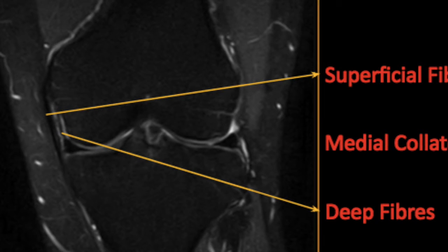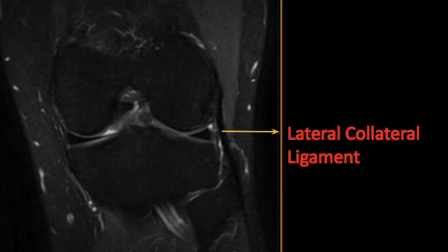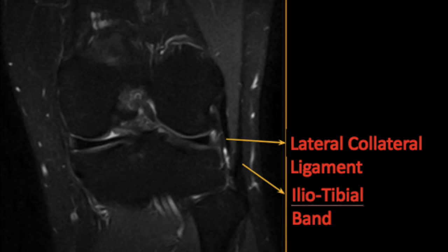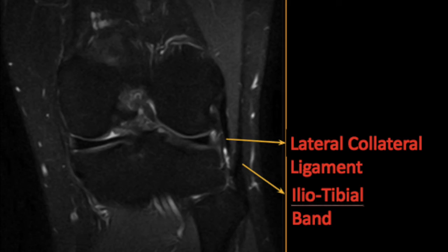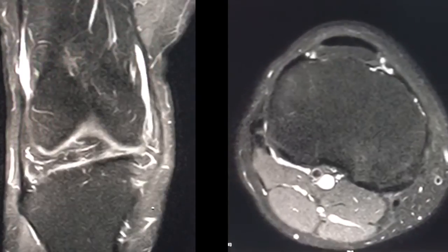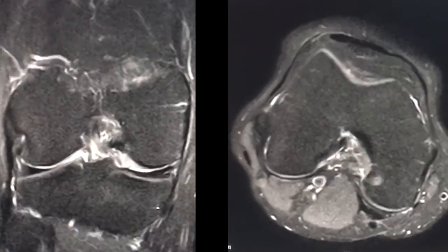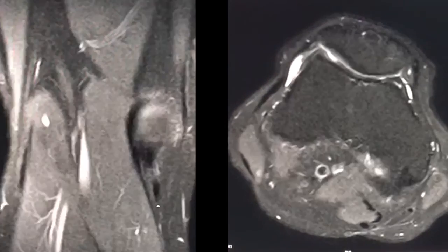Coming to the lateral collateral ligament, or the fibular collateral ligament — it originates from the lateral epicondyle of the femur and goes up to the fibula. It is the primary varus stabilizer of the knee. LCL injuries are associated with posterolateral corner injuries, which is a separate segment we will be dealing with later. Unlike the MCL, the LCL has no direct connection with the joint capsule or the lateral meniscus, and is separated from it by a small fat pad.